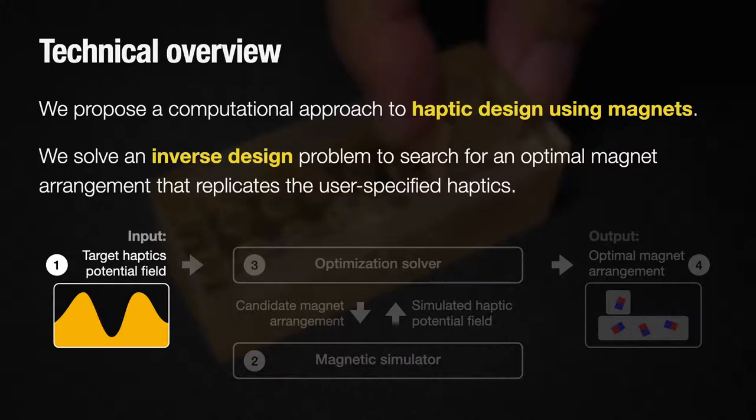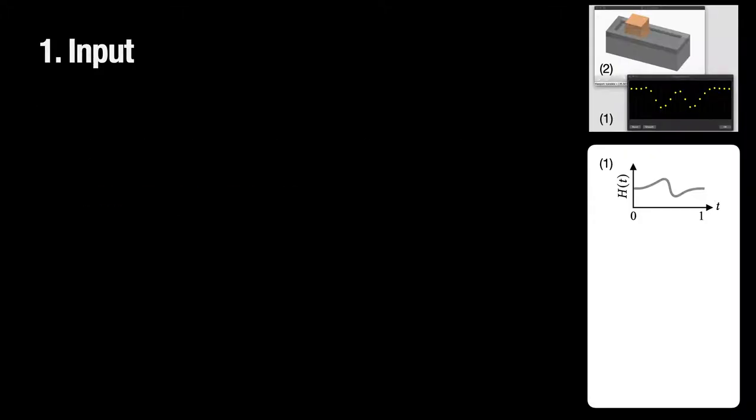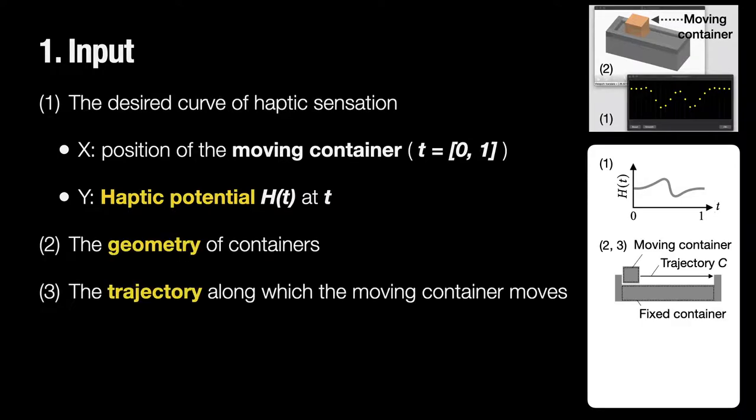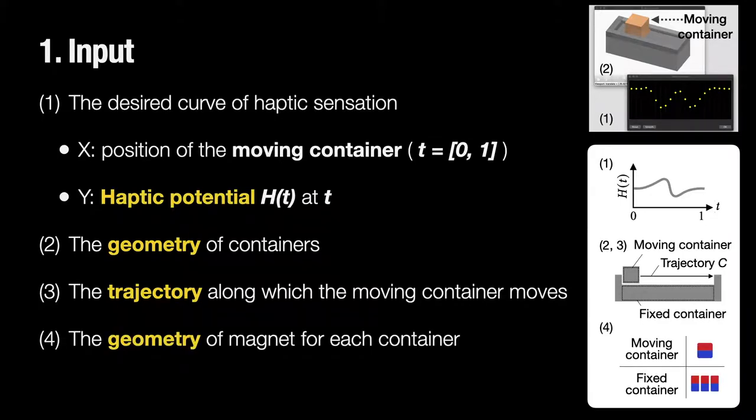First, we have to prepare four input data. Here, the curve is the haptic sensation of the moving container, which can be input by handle line shape tool. Here, the y-axis is the haptic potential, H(t), that we originally defined for this study. We also have to set the geometry of containers, the trajectory of the moving container, and the geometry of magnets for each container.